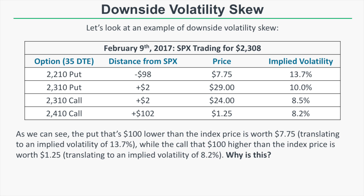The 2410 call, which is about 100 points above SPX, is trading for $1.25 generating an implied volatility of 8.2%. Comparing the put that's $100 below SPX to the call that's $100 above SPX gives us an idea of where volatility is skewed. The 2210 put is at $7.75 with 13.7% IV, while the 2410 call is at $1.25 with 8.2% IV — clearly the demand for the out-of-the-money put is significantly more than for the out-of-the-money call.